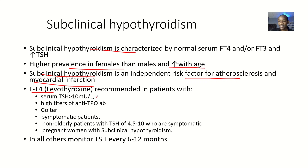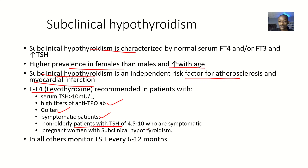LT4 — levothyroxine — is a synthetic type of thyroxine. It is recommended in patients with a serum TSH level of more than 10 milli-units per liter, in patients with high levels of anti-thyroid peroxidase antibodies (an important enzyme in thyroid synthesis), in patients with goiter, and in symptomatic patients. It is also indicated in non-elderly patients with TSH levels of about 4.5 to 10 who have started becoming symptomatic.